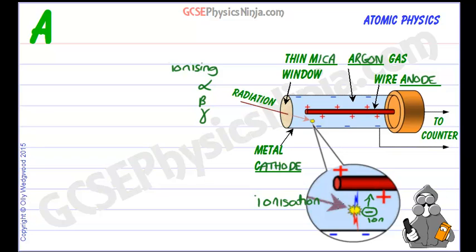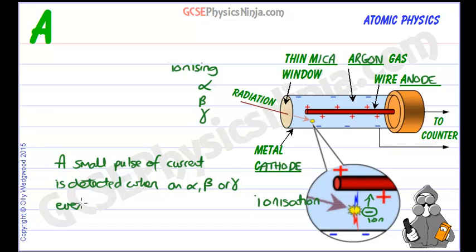And that creates a small pulse of current. So a small pulse of current is detected when an alpha, beta or gamma event ionizes some of the argon gas.